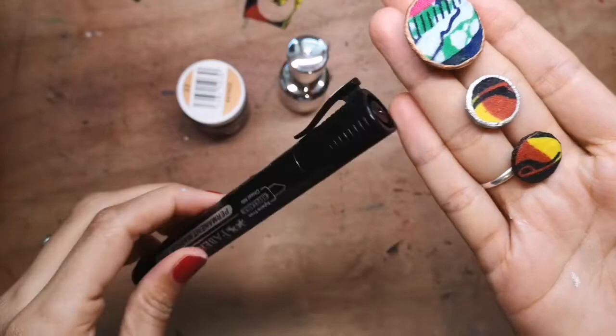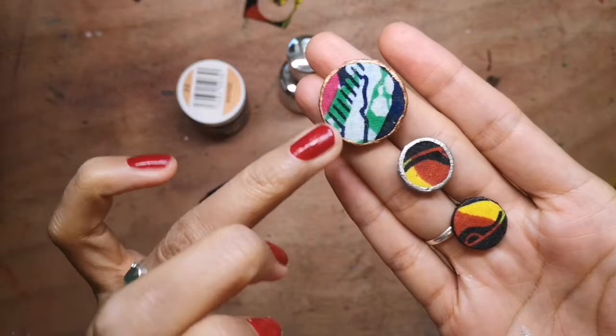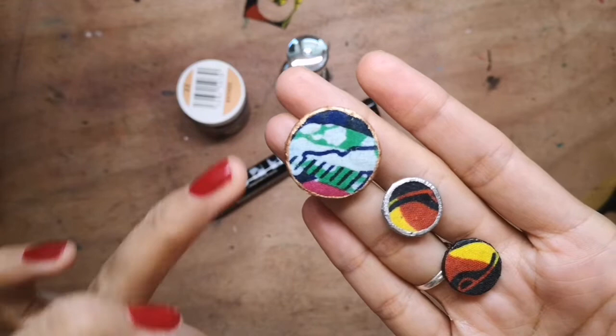Personally, I prefer the fabric paint or acrylic paint. It doesn't even have to be fabric paint because you're not going to swim with these. So it would be perfectly fine to use acrylic paint around the edges.